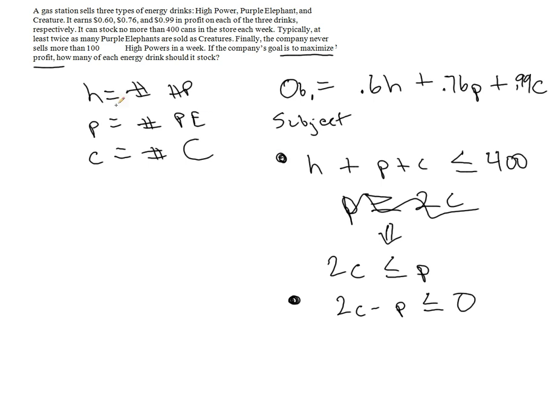And the company never sells more than 100 high powers. So that means the number of high powers is less than or equal to 100 since they don't ever sell more than. Sometimes they might sell equivalent to. And now I'll write out my constraints. So we're kind of getting the hang of writing constraints for these. So here'll be my HPC.